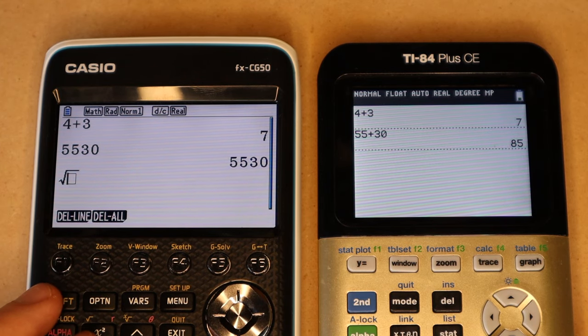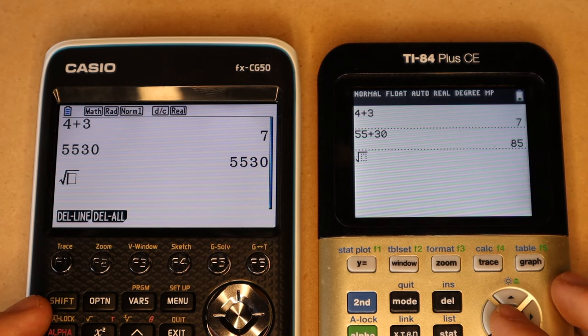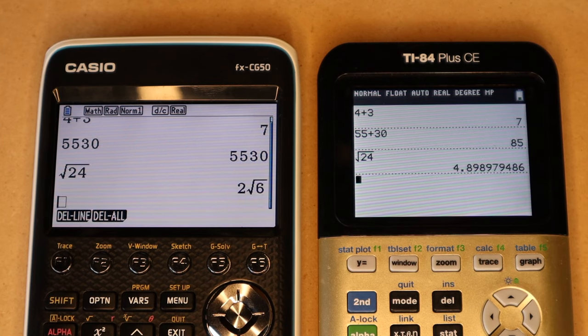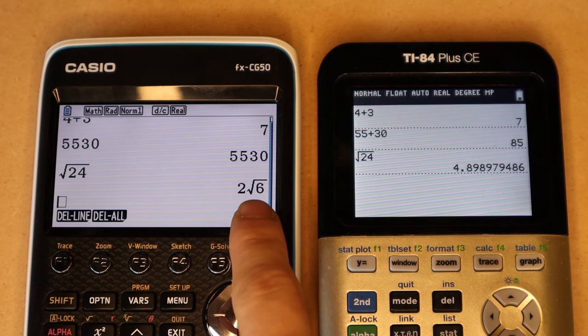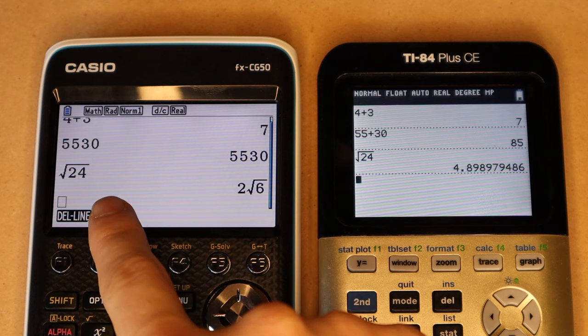But there is one way that the Casio has a leg up in terms of general calculation, and that is its ability to give exact answers. So if I type in the square root of 24 here, and then press enter, you'll see TI-84 Plus CE gives me only the decimal answer. But the Casio will give the simplified radical form of the square root of 24.